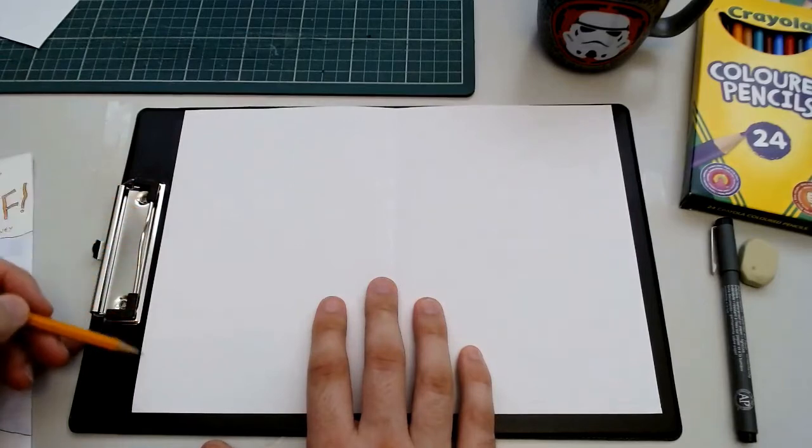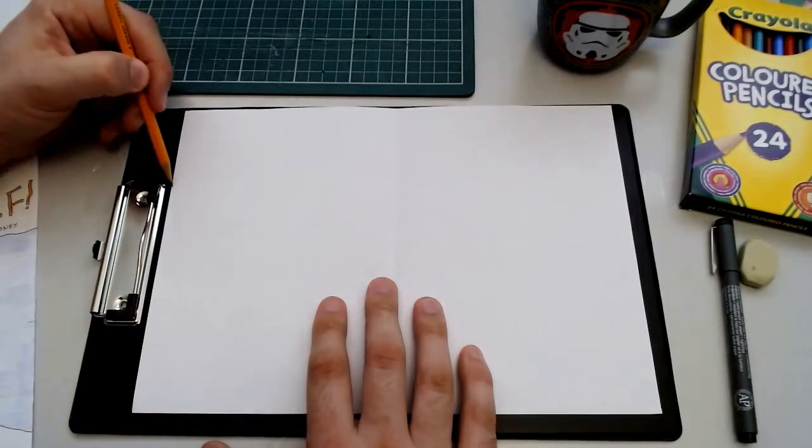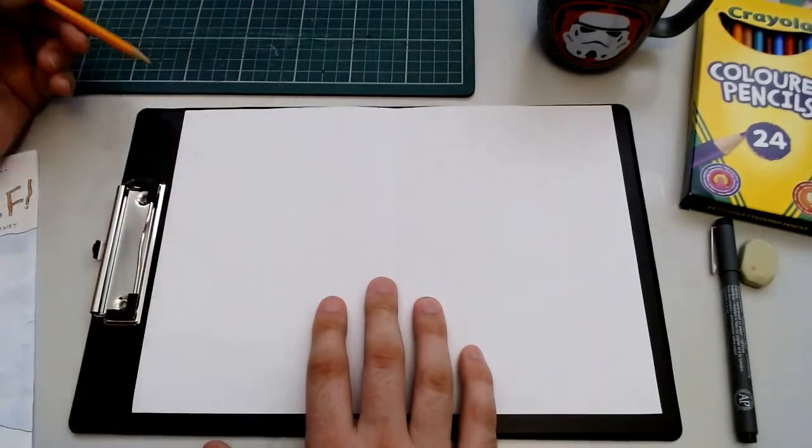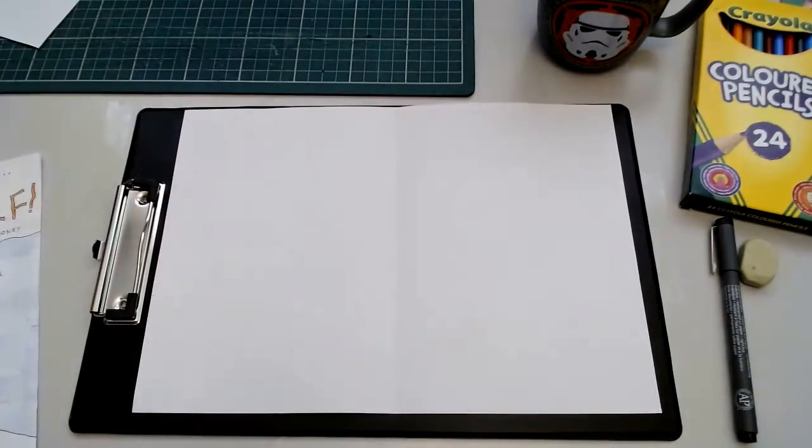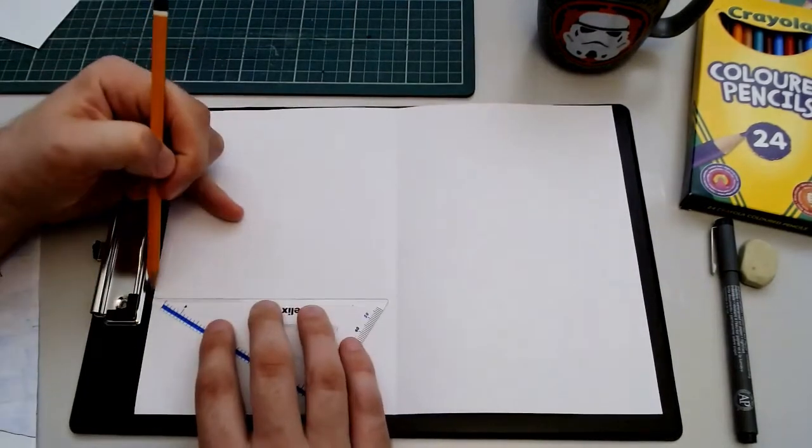So I'm going to try and space out three evenly sized boxes here. So about here, about here. Doesn't need to be perfect. And here and here.